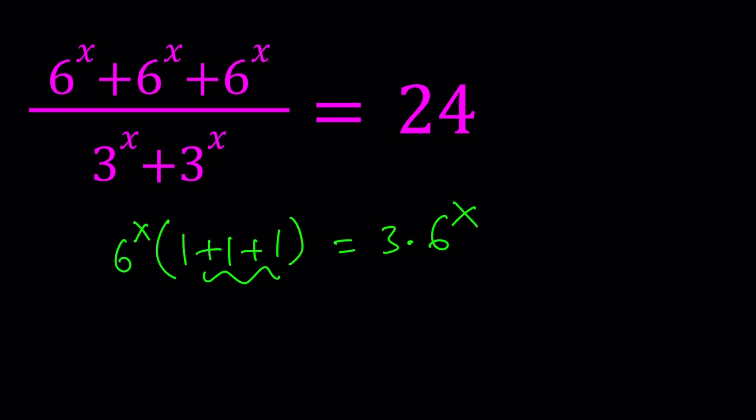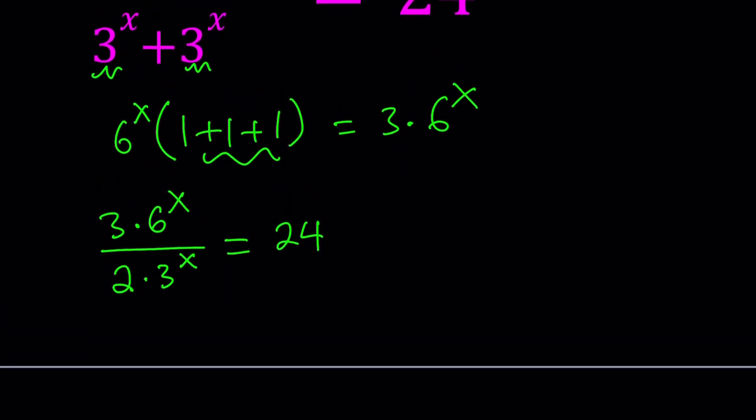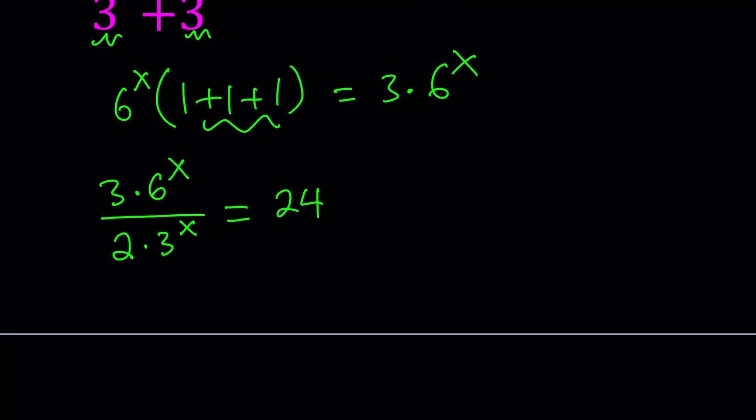For the numerator, I'm going to write 3 · 6^x. For the bottom, since I have 3^x twice, I'm going to write it as 2 · 3^x equals 24. This is the very first step, so taking each step at a time is important. Make sure you understand what's going on in each step.